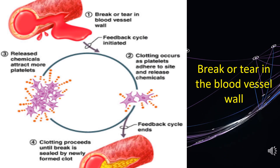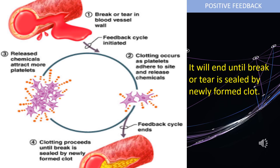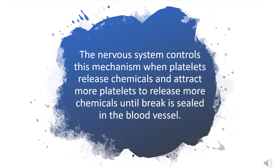Let us have some more examples. Look at the figure — this is what happens when part of the body is wounded. A break or tear in the blood vessel triggers the brain to initiate feedback responses. The feedback cycle will end when the break or tear is sealed by newly formed blood clot. This is an example of positive feedback. The nervous system controls this mechanism when platelets release chemicals and attract more platelets to release more chemicals until the break is sealed in the blood vessel.